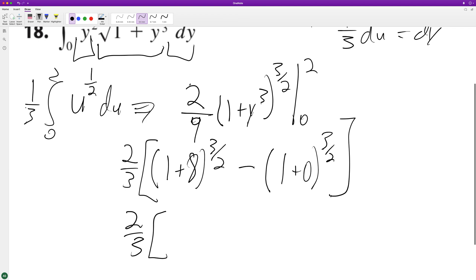Two-ninths - so 9 raised to the three-halves. So we can make it easy, do the square root first - becomes 3, 3 cubed is 27, minus 1. So this becomes 26 times two-thirds, so it becomes 52 over 9, or